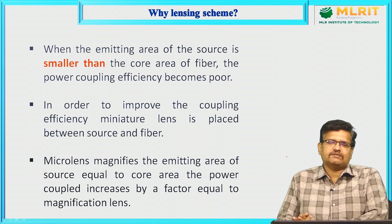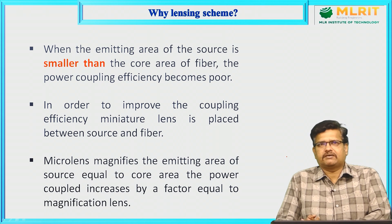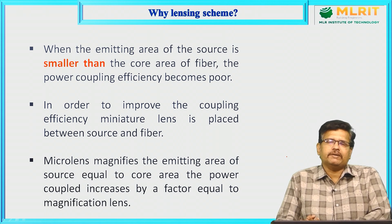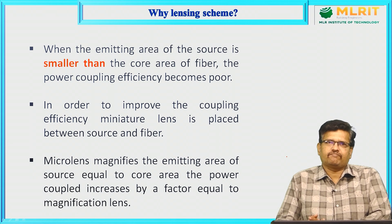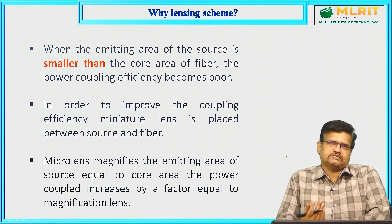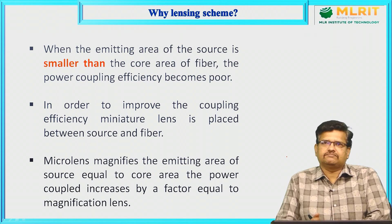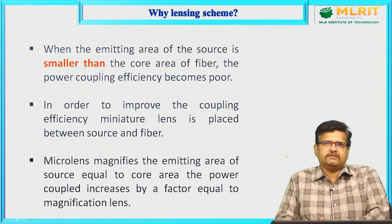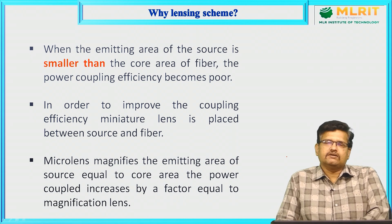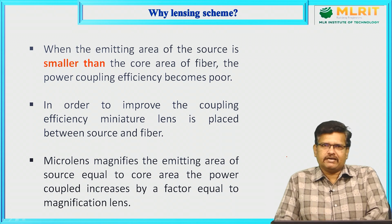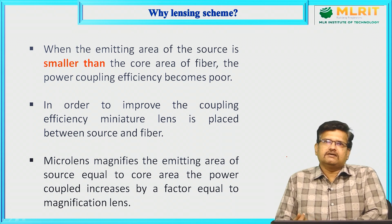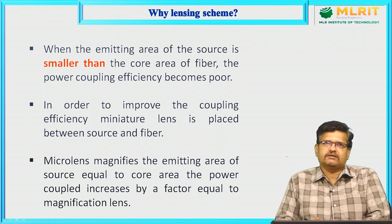When the emitting area of the source is smaller than the core area of the fiber, we have poor coupling efficiency, meaning some more amount of power may be lost. To improve this coupling efficiency, we have to keep some lens in between the source and the fiber to capture the signal. It can magnify the signal and deliver it to the fiber core, so power coupling efficiency may increase and loss may decrease. That is why we go for the lensing scheme.